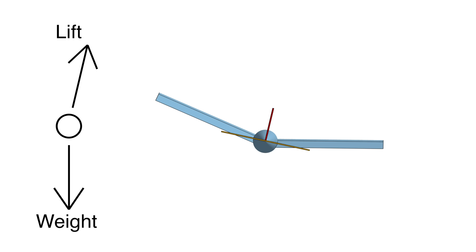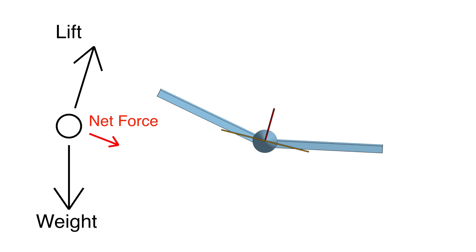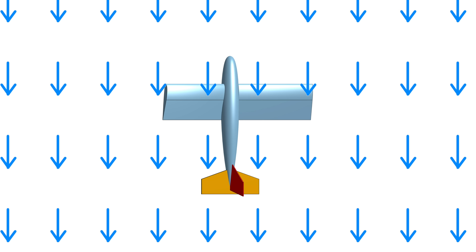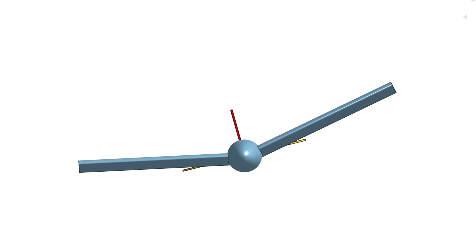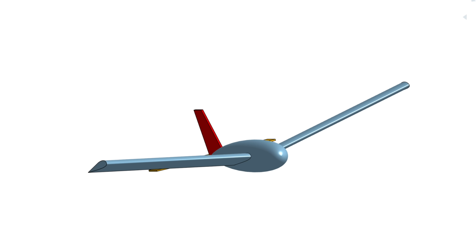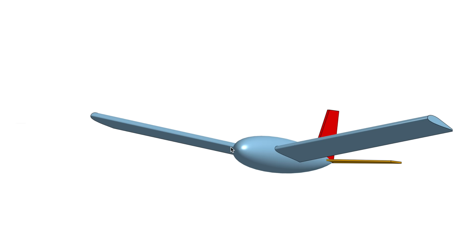Let's say we're flying straight and level with lift equal to weight, and then a gust of wind tilts the plane. Now our lift and weight are no longer directly opposing each other. This imbalance creates a net force that pulls the aircraft sideways — called a side slip. As the aircraft starts to slip, the oncoming air hits the plane at an angle. This is where dihedral comes in. Relative to the oncoming air, the lower wing now has a much steeper angle of attack than the upper wing, making it generate more lift and bringing the plane back to level.